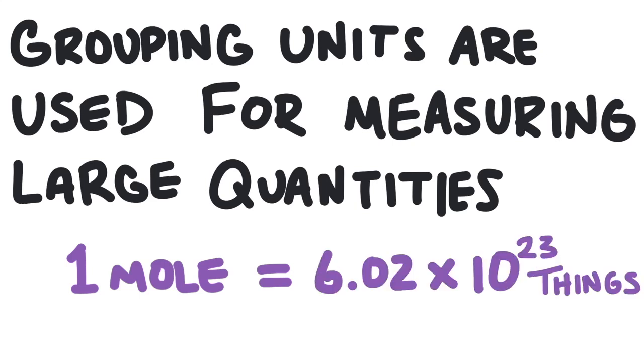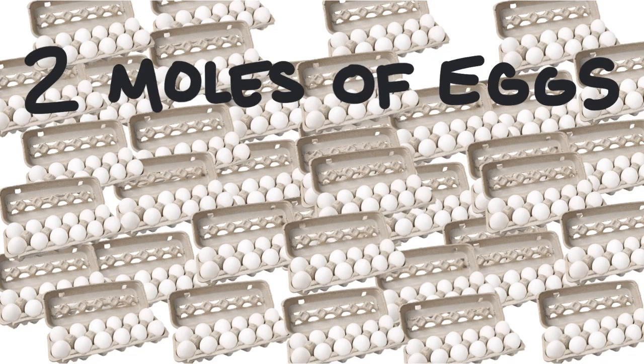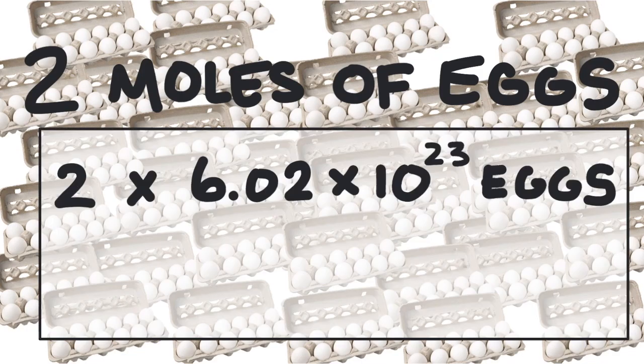Precisely, the mole is a grouping of 6.02 times 10 to the 23 things. So two moles of eggs would be the same thing as saying 2 times 6.02 times 10 to the 23 eggs.